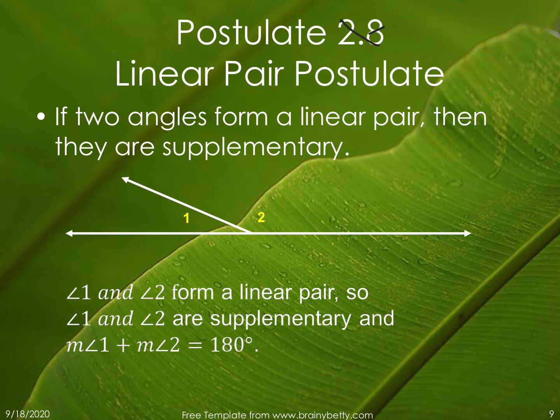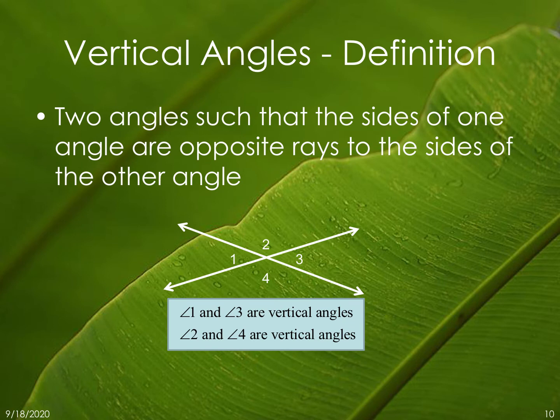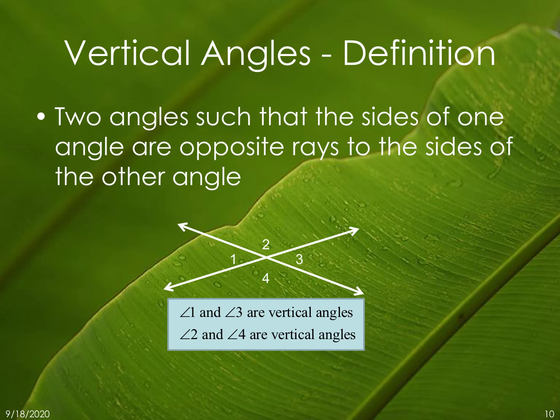Again, same thing with vertical angles. This is the definition — we learned this back in chapter one. It tells you how vertical angles are formed: two angles such that the sides of one angle are opposite rays to the sides of the other angle. The definition tells you how they're formed. On the next slide it's going to be the theorem, telling you that they're congruent. Know the difference between the vertical angles definition and the vertical angles theorem. We're going to use the theorem more than the definition.